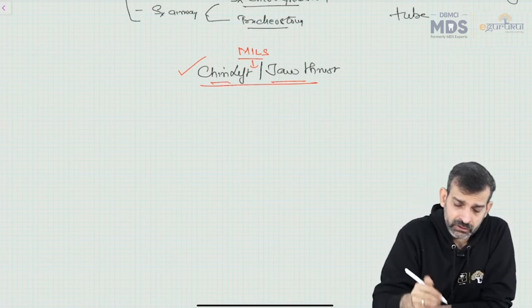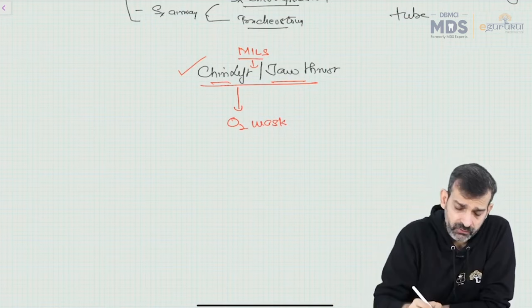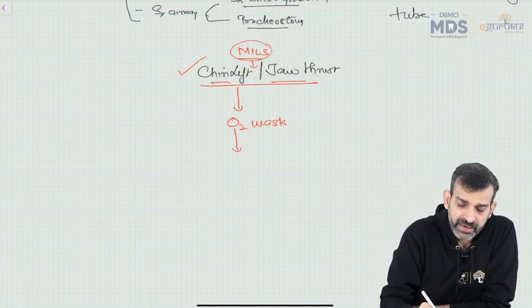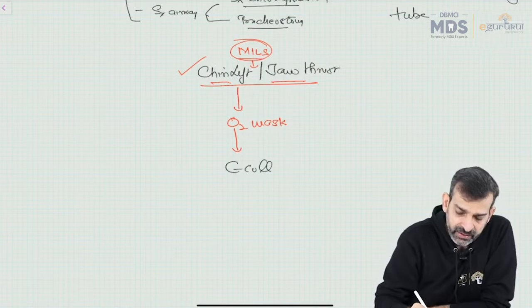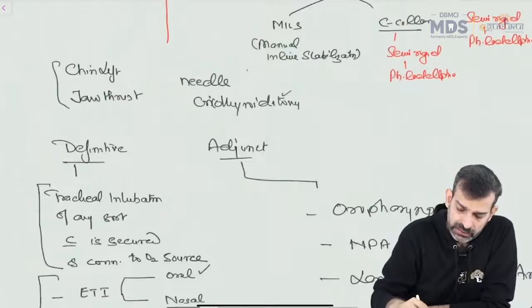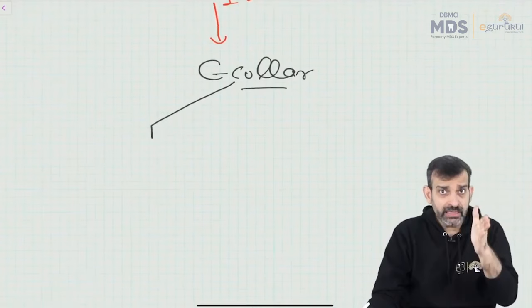The moment help arrives, immediately apply an oxygen mask. After applying the oxygen mask, the next step is to free the individual who is providing MILS by applying a cervical collar. The cervical collar used in trauma is the Philadelphia collar. After applying the Philadelphia collar, you now assess whether your patient is in need of a definitive airway or not.